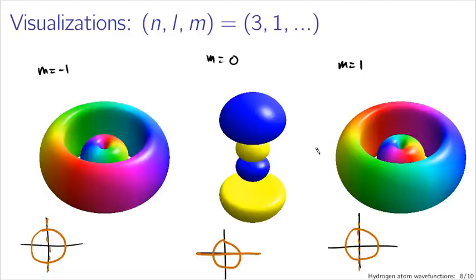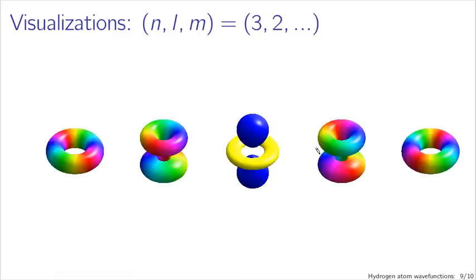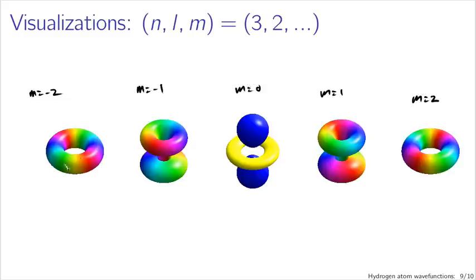We can keep going higher still. This is l equals 2 in the case of n equals 3, and the structures we get are slightly more complicated. For the case where m is as large as it can be — m equals ±2 — it always looks the same: the particle is unlikely to be found along the z-axis, and we have this sort of donut shape going around.